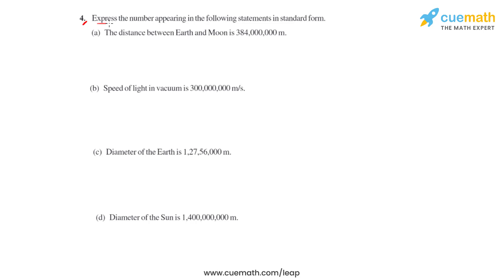Question number 4 says to express the numbers appearing in the following statements in the standard form. A number expressed in standard form is a product of a number that lies between 1.0 and 10.0 (including 1.0) and a power of 10. The power of 10 can be anything depending upon the position of the decimal.